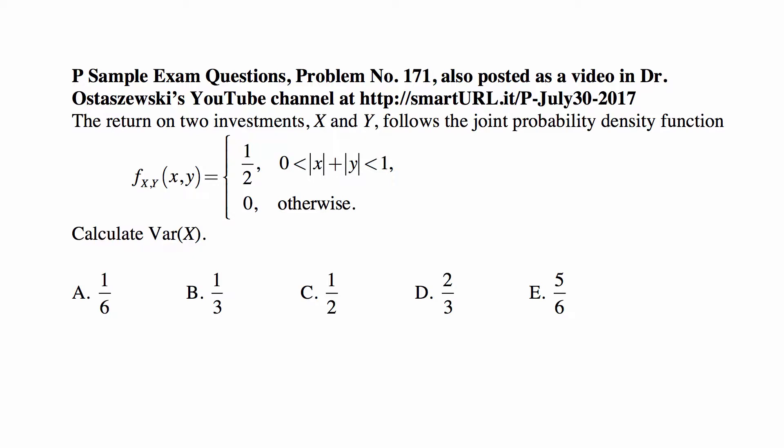The return on two investments, X and Y, follows the joint probability density function, which is one-half for X and Y such that the absolute value of X plus the absolute value of Y is greater than zero and less than one.